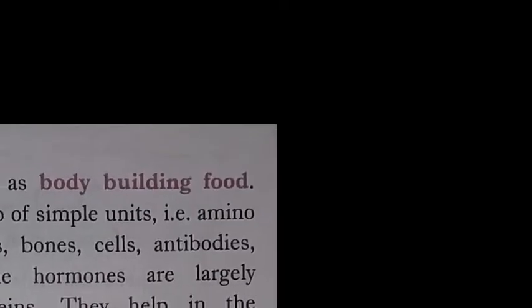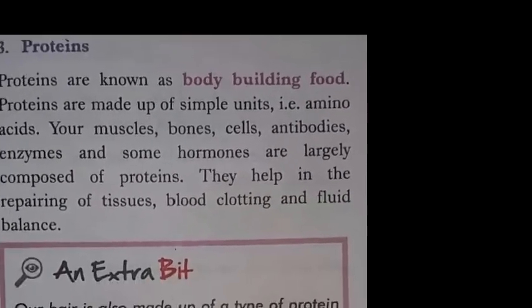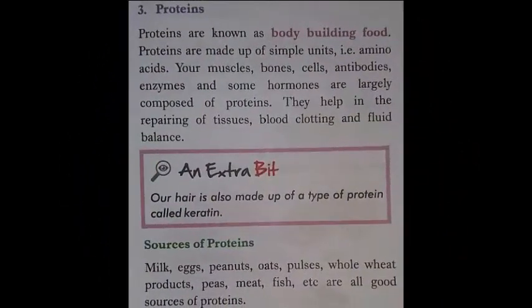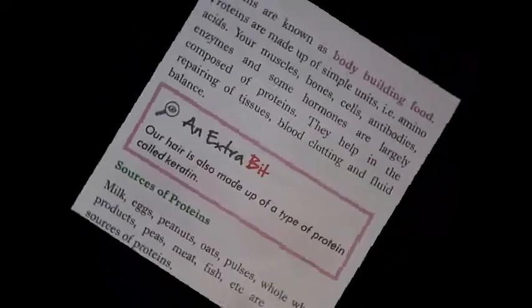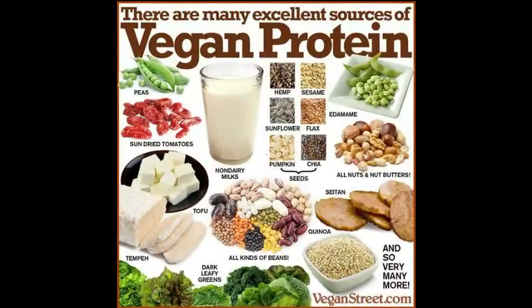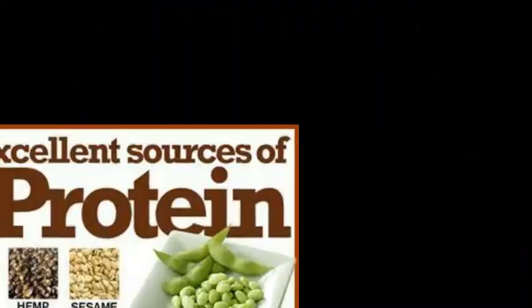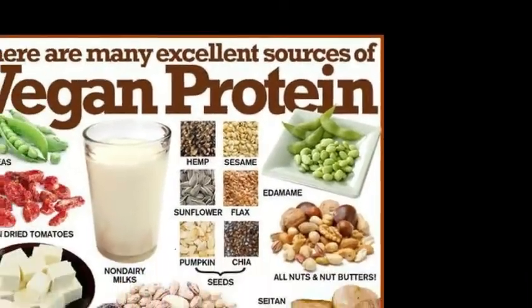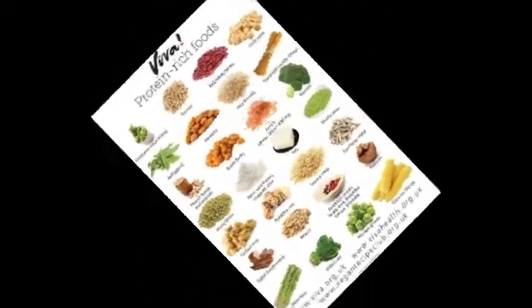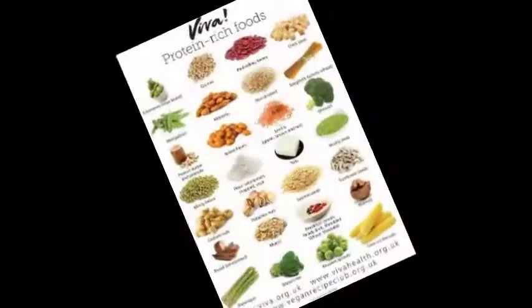Proteins help in repairing all the damaged parts of the body. The main sources of protein are milk, egg, peanuts, pulses, whole wheat products, fish, and meat — these are all good sources of protein.